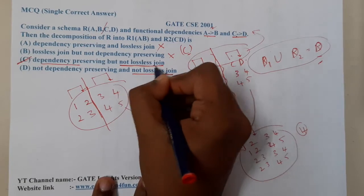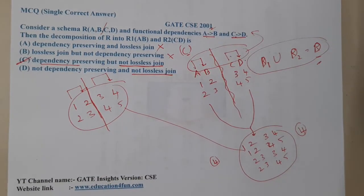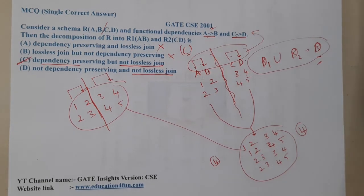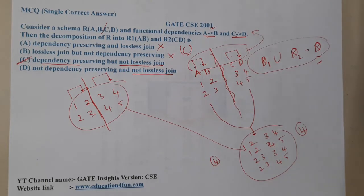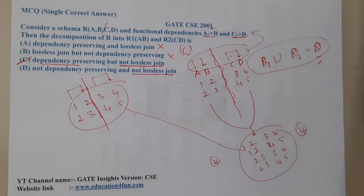With that understanding, option C is the correct answer: the decomposition is dependency preserving but not lossless join. It is quite an interesting and easy question. I hope everyone got a clear idea. In the next lecture let us continue with the next question — thank you for watching.